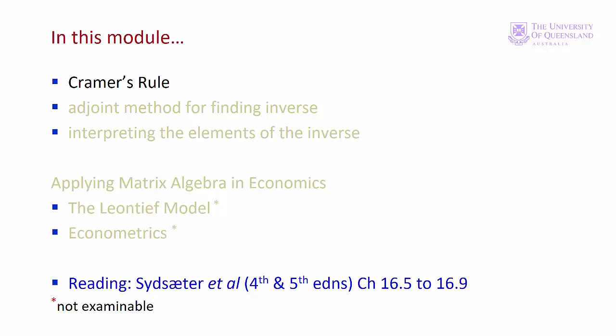The first method we'll consider is Cramer's rule. In module 2 we'll develop a method of finding an inverse and thus solving a system of equations — this is the adjoint method. We'll also see that an inverse provides some useful information. Module 3 provides an overview of how matrix algebra can be used in economics, looking first at the Leontief input-output model and then an example from econometrics.